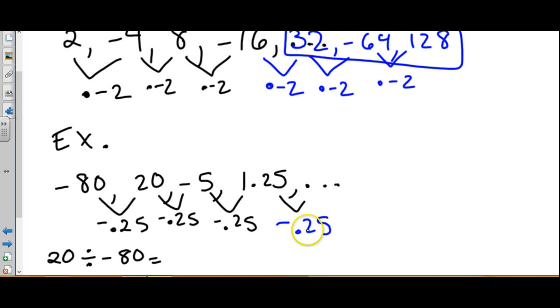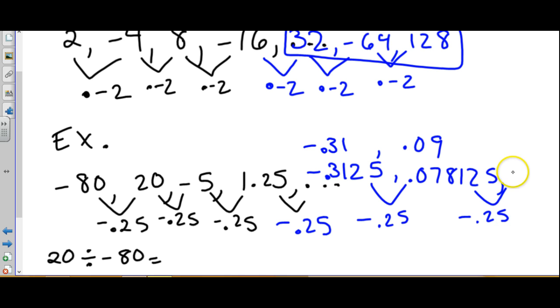So now we're on to finding the next three terms. 1.25 times negative 0.25 is negative 0.3125. Now we're starting to get a lot of digits. Usually at this point, they're going to ask you to round it to like the nearest hundredth. So if we were to do it again, we'd get 0.078125, which would round to be 0.09. And if we do it one more time, we'd get negative 0.02 rounding it.